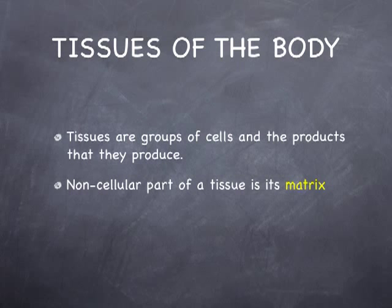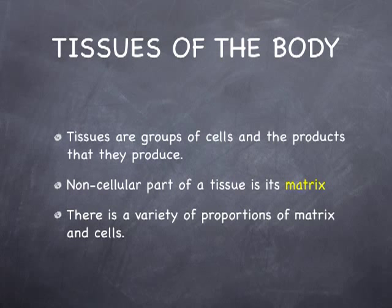Make sure you have firmly in mind the concept of the word matrix — it is all the stuff that makes up the tissue beside the cells. When you think of tissues, you'll recognize that some tissues have a lot of matrix and some have very little. There's quite a variety of proportions. Bone, for instance, is a tissue with a lot of matrix. The majority of the tissue is matrix.